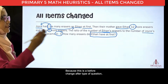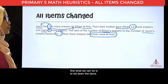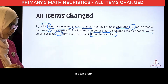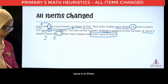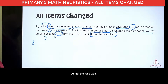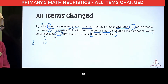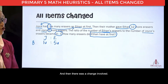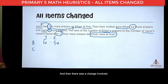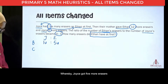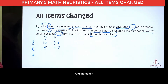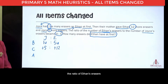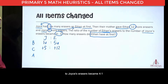Because this is a before-change-after type of question, what we can do is to list down the items in a table form. So, Joyce is to Ethan at first — the ratio was 1 is to 5. Then, there was a change involved, whereby Joyce got 5 more erasers and Ethan got 12 more erasers. And thereafter, the ratio of Ethan's erasers to Joyce's erasers became 4 is to 1.